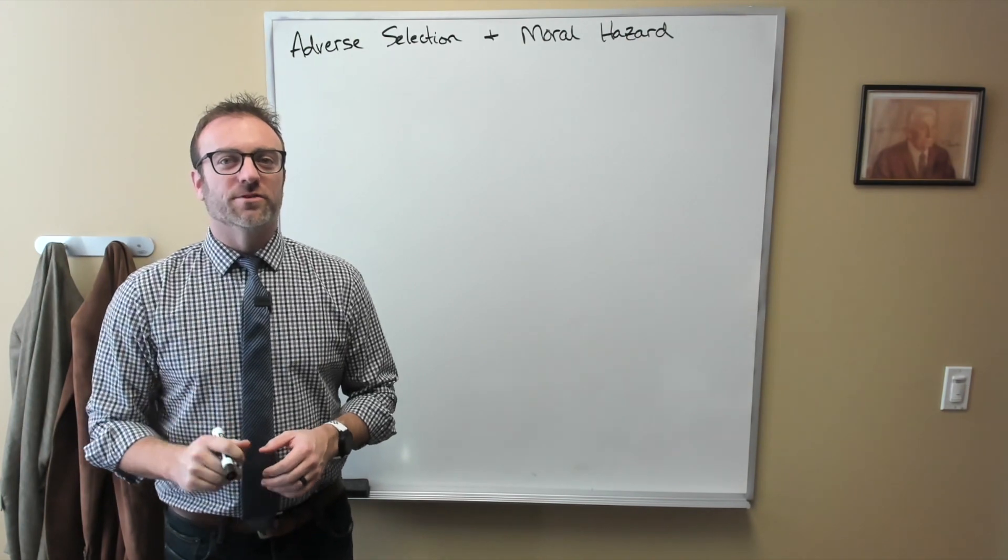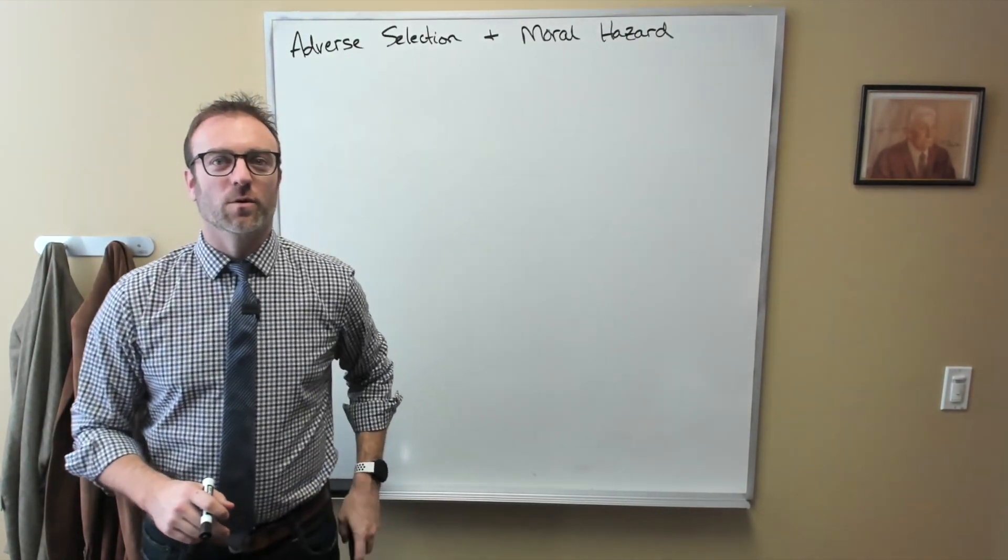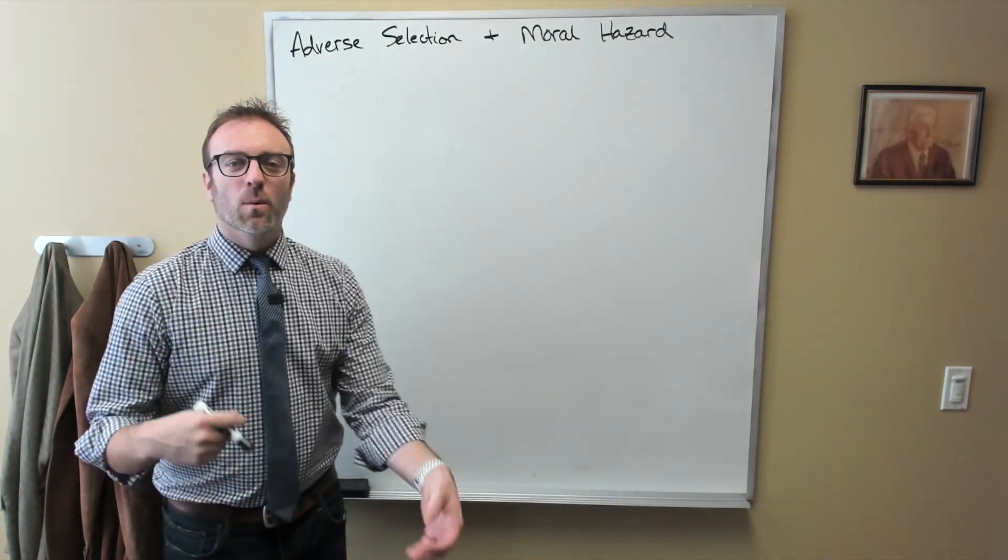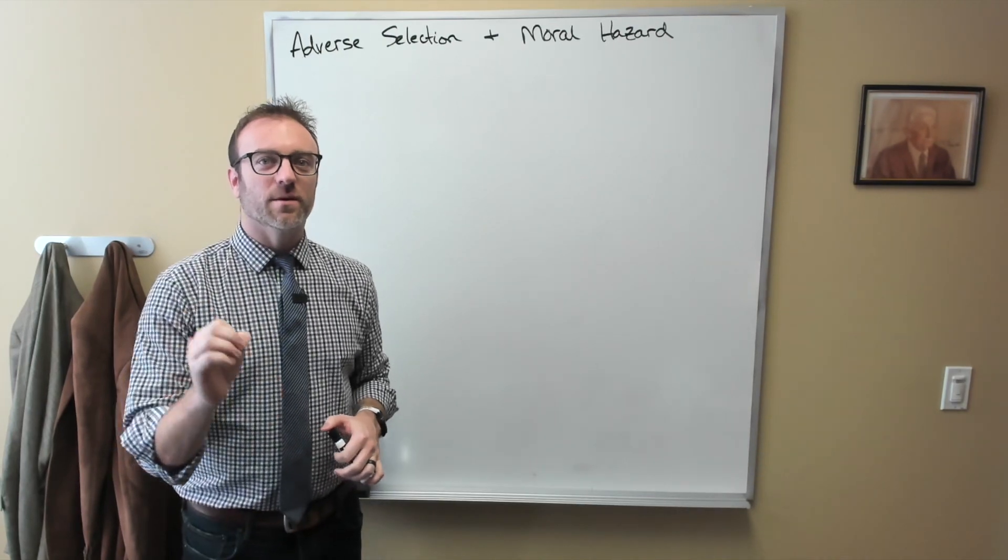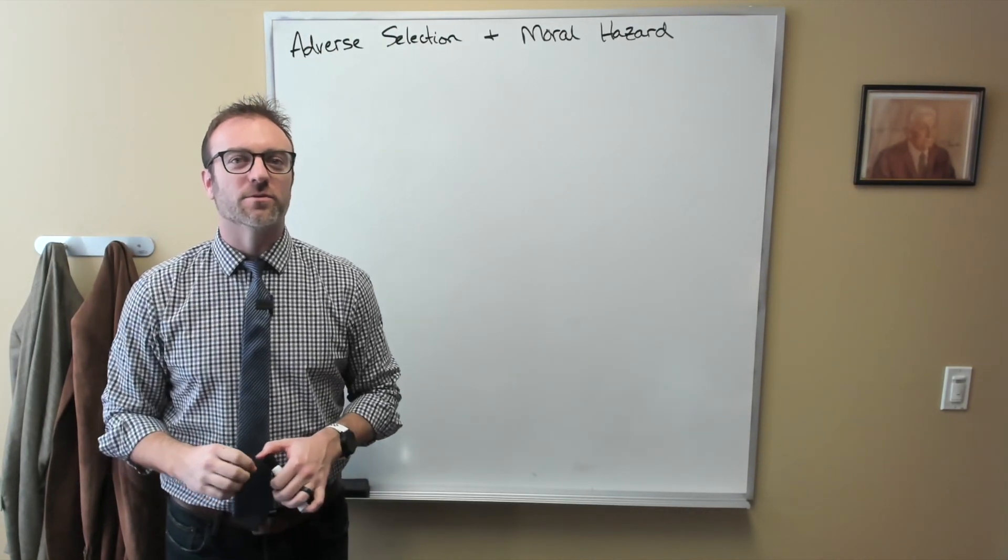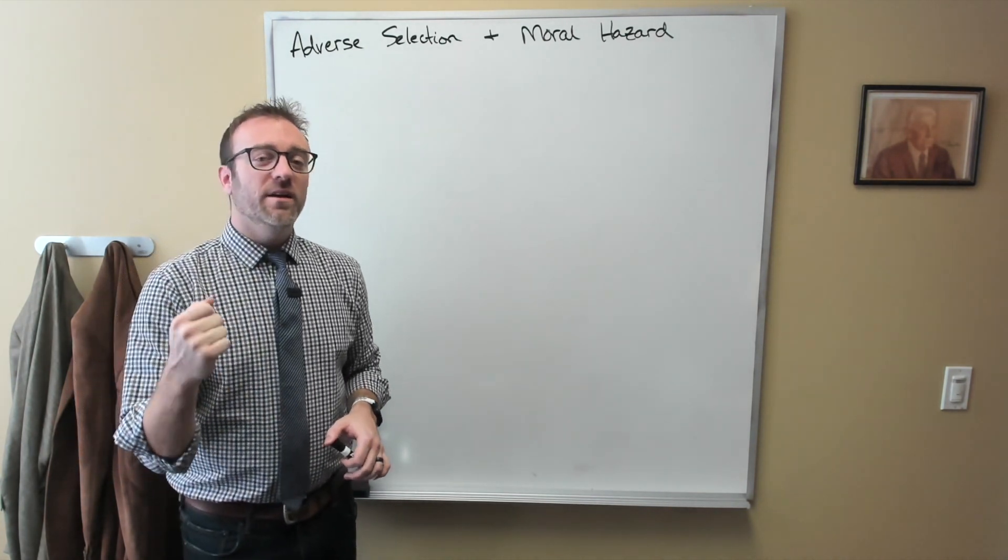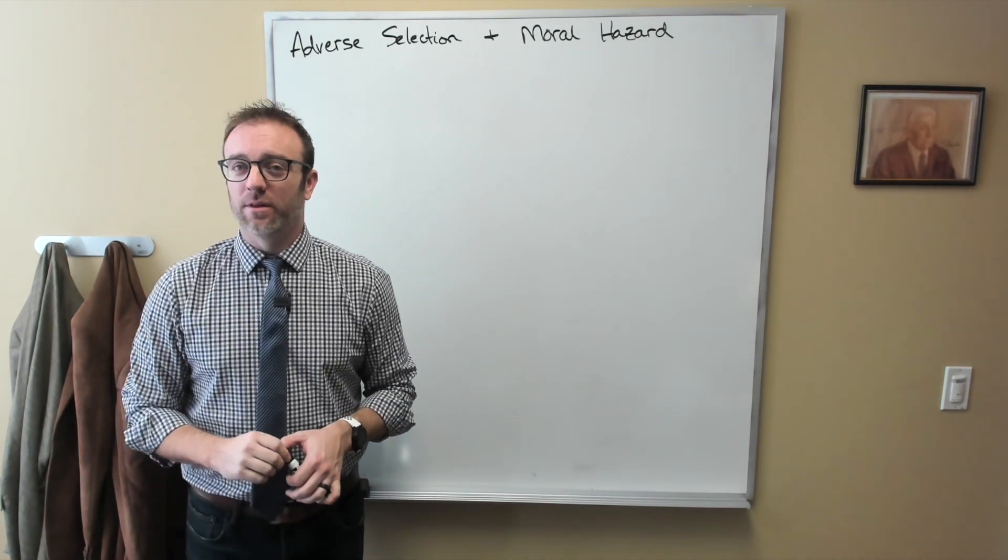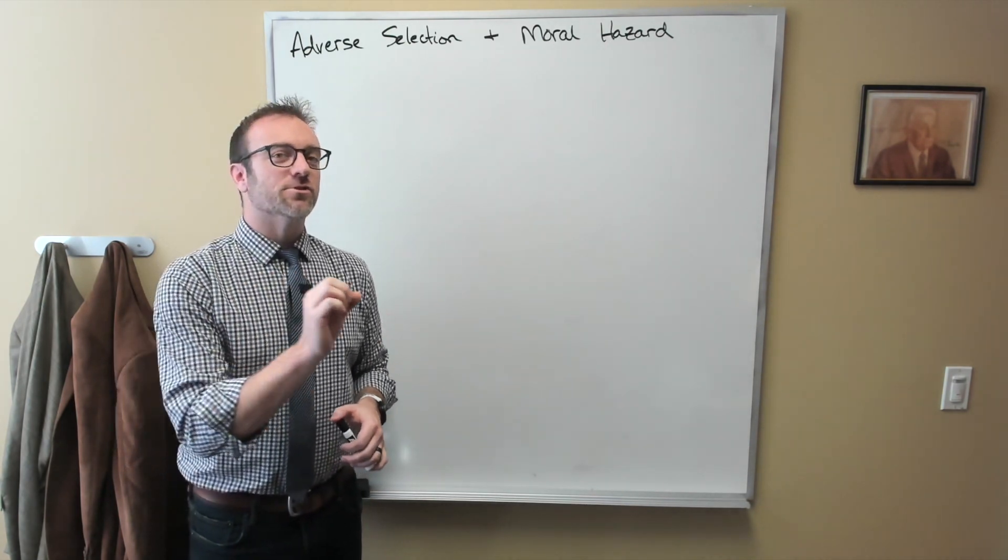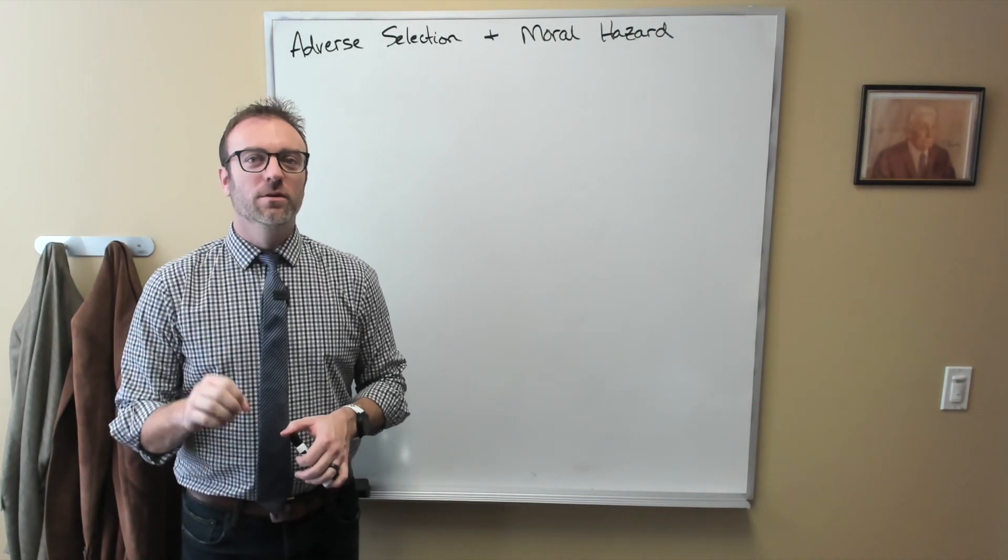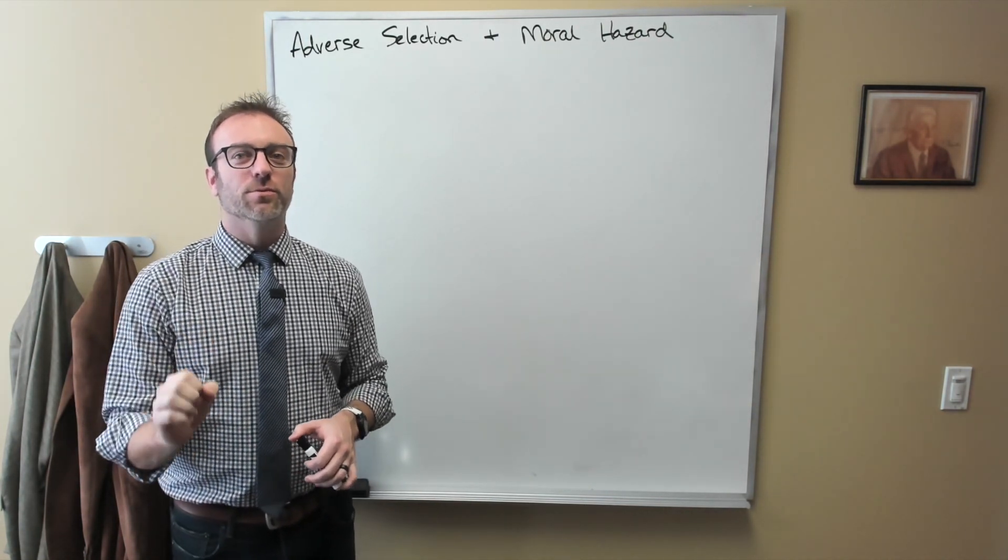We're going to relax one assumption today, though, and it's one that we didn't even really mention that we were making. So what was that assumption? Well, in all of our problems last week, I said something like there is a 10% or a 50% chance of getting sick and needing to seek treatment. While I explicitly told you this probability, what I implicitly assumed was that both the insurance company and the individual people knew that probability and that they knew that it was the true probability.